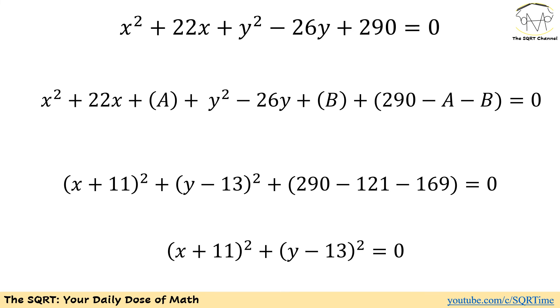And 13² is going to be 169. If you subtract them from 290 you are going to end up with 0. So at the end we have (x + 11)² + (y - 13)² = 0.